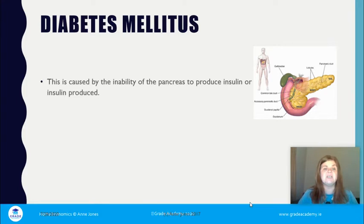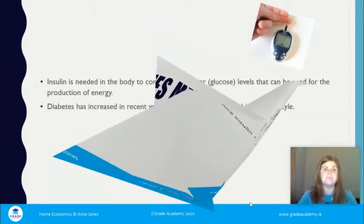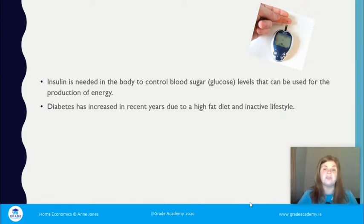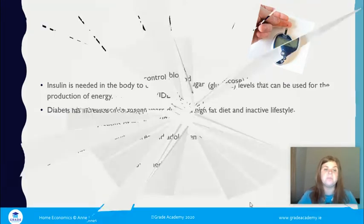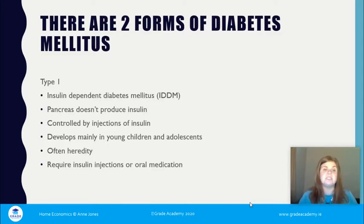Diabetes mellitus is caused by the inability of the pancreas to produce insulin, or insulin is produced but cannot be used effectively. Insulin is needed in the body to control blood sugar and glucose levels for energy production. Diabetes has increased in recent years due to high-fat diet and inactive lifestyle. Type 1 is insulin-dependent diabetes mellitus — the pancreas doesn't produce insulin, it's controlled by insulin injections, develops mainly in young children and adolescents, can be hereditary, and requires careful monitoring of blood sugar levels and regular eating.